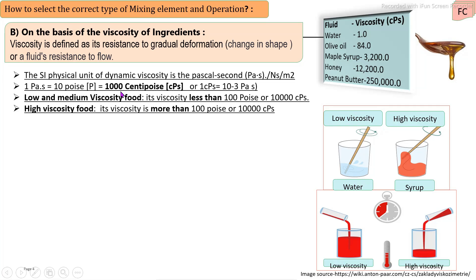10 poise equals 1000 centipoise. As per viscosity, low and medium viscosity liquids have a viscosity lower than 100 poise or 10,000 centipoise, and high viscosity liquids have a viscosity more than 100 poise or 10,000 centipoise.